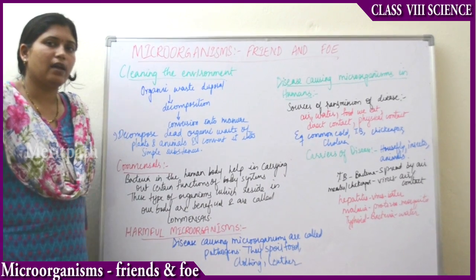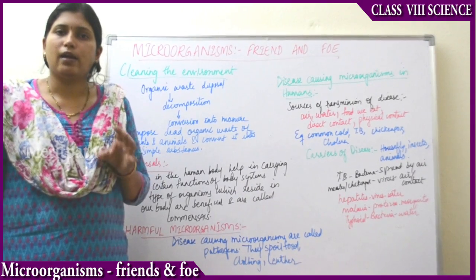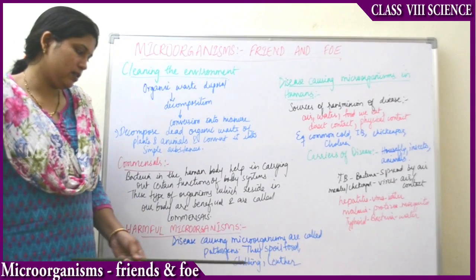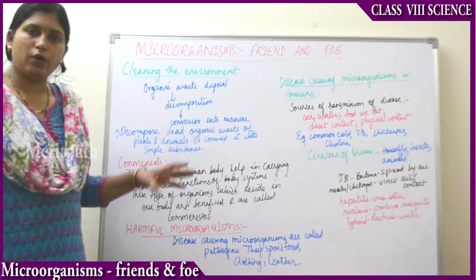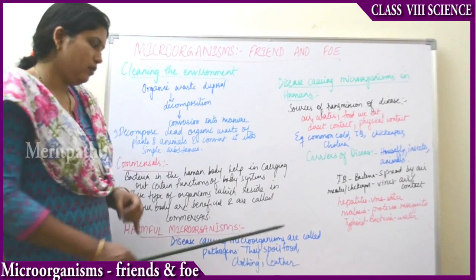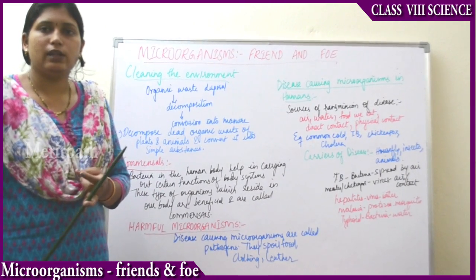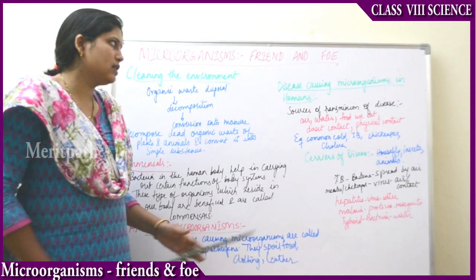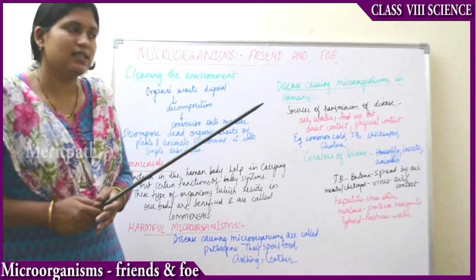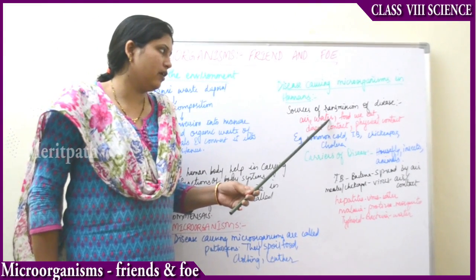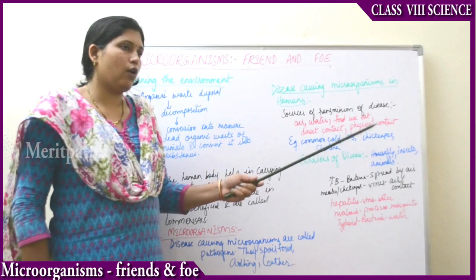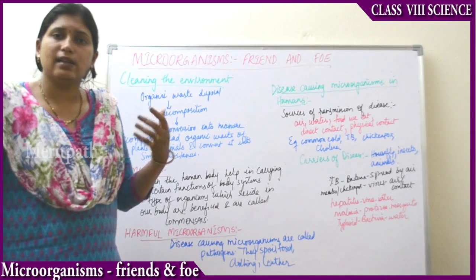Next is harmful microorganisms. There are many microorganisms around us which cause diseases — these are known as harmful microorganisms. Disease-causing microorganisms are called pathogens. They spoil food, clothing, and leather as well. In human beings, the modes of transmission of diseases are: air we breathe, water we drink, food we eat, and direct or physical contact with other organisms. Through all those things, diseases as well as communicable diseases spread.